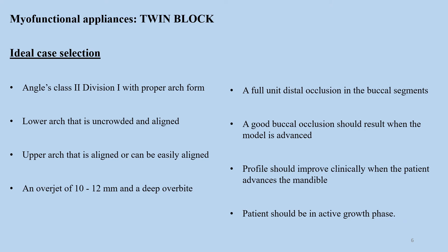For ideal case selection for a twin block: Angle's Class 2 Division 1 with a proper arch form is suitable. If the lower arch is uncrowded and aligned, and the upper arch is aligned or can be easily aligned with minimal tooth movement, the twin block can be considered. A full unit distal occlusion in the buccal segments, a good buccal occlusion, and a profile that improves clinically when the patient advances the mandible are also criteria — assessable using VTO. The patient also needs to be in an active growth phase for the twin block to take effect.